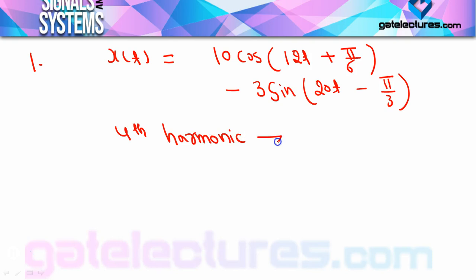In the last video we studied harmonics — what the meaning of a harmonic is. The terms with n·ω₀ are called harmonics. So here we need to calculate the amplitude of the fourth harmonic.